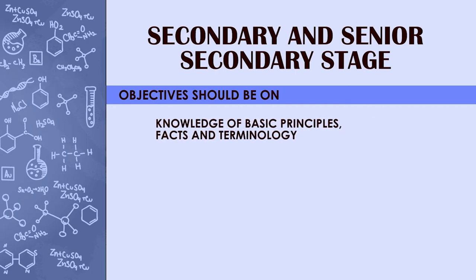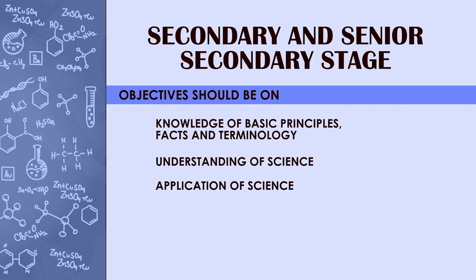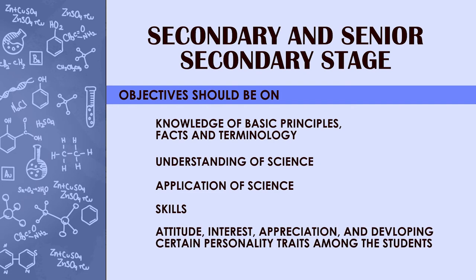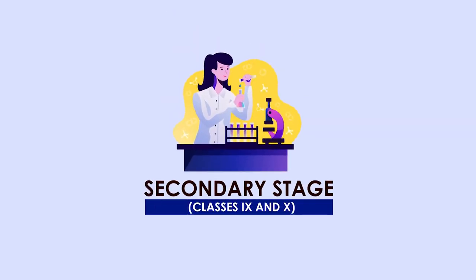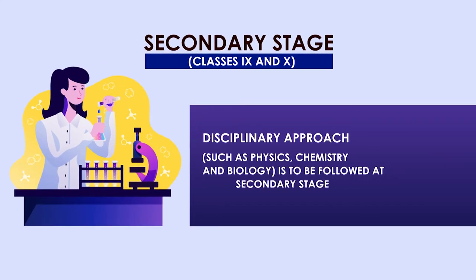At the secondary stage — that is for classes 9th and 10th — the curriculum should focus on the following aspects. A disciplinary approach such as physics, chemistry, and biology is to be followed. In addition to learning definitions, science teaching should focus on comprehension and attainment of higher order thinking skills, that is, problem solving, critical thinking, creative thinking, and decision-making skills.